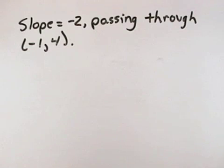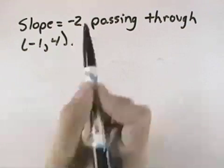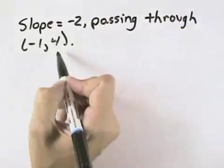Here we want to use the given conditions to write an equation for each line in point-slope form and slope-intercept form. So we know the slope is negative 2, and it passes through the point negative 1, 4.